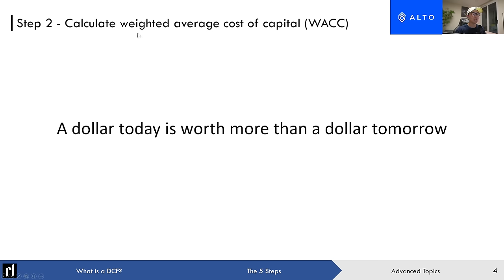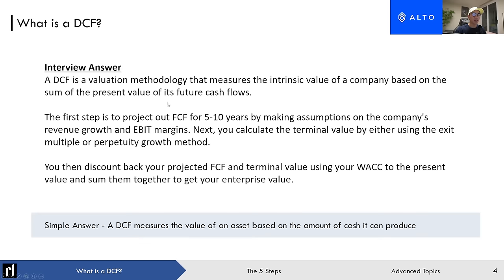Next we need to calculate the weighted average cost of capital. Scrolling back up, I want to highlight something I breezed past: the DCF measures the intrinsic value of a company based on the sum of the present value of its future free cash flows. 'Present value' and 'intrinsic value' are both very important. Intrinsic value means it's based on the company's ability to generate cash — not affected by comparing to other companies or transactions, which are relative valuation methods like trading comps and transaction comps.